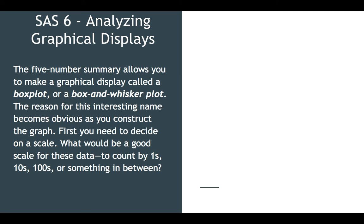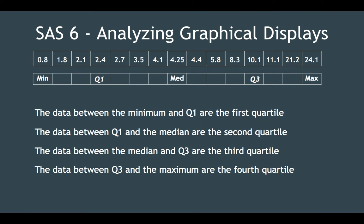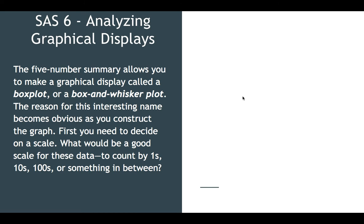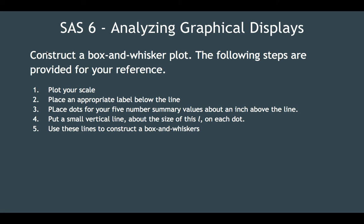First, you need to decide on a scale. What would be a good scale for these data — count by ones, tens, or a hundred? We have a minimum of 0.8 and a maximum of 24.1, and there's usually between one and a half points between values, though there's a larger spread of about 10 points toward the upper end. I would say counting by two is probably a good number. Any of these work, but we're going to go with two.